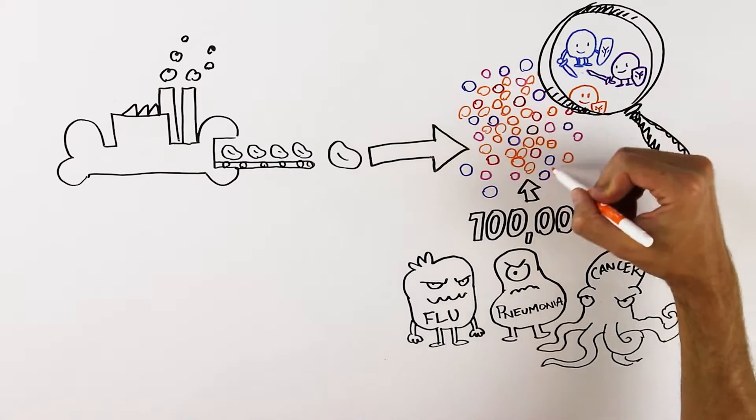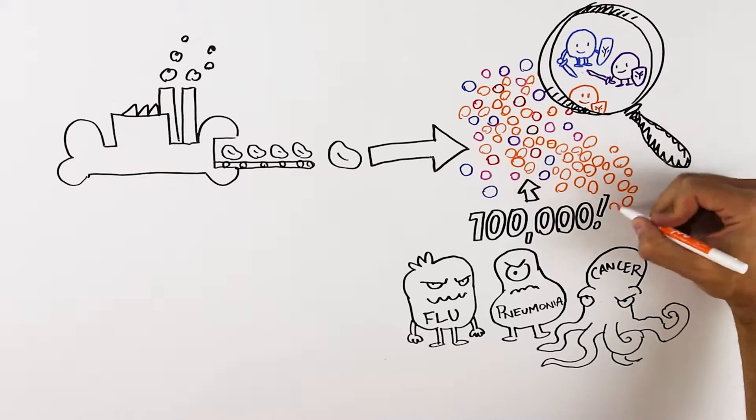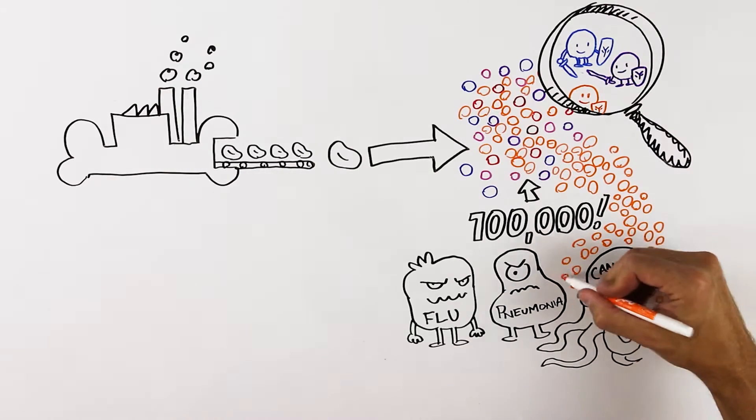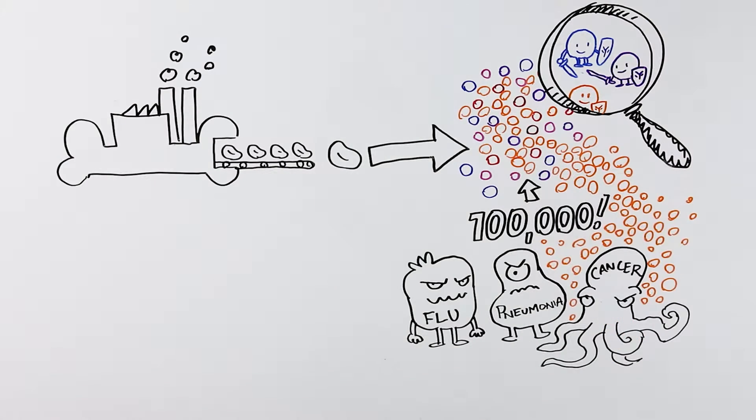When someone has multiple myeloma, one of these antibodies overgrows, doesn't die when it should, and crowds out the normal antibodies, making your overall immune system weaker, not stronger.